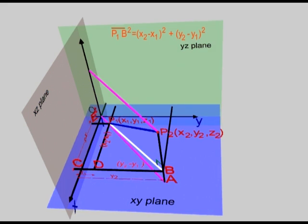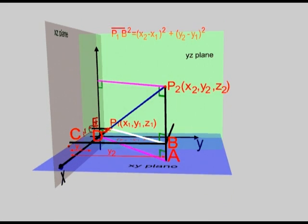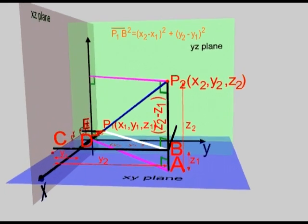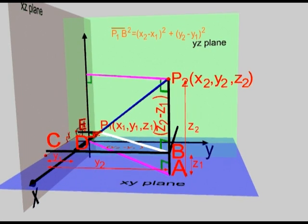From points P2 and A draw lines perpendicular to the z-axis. We will rotate the diagram so that you can see the rectangle formed. You can see that the line segment BP2 is equal to z2 minus z1.